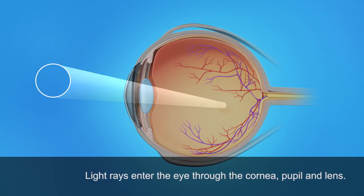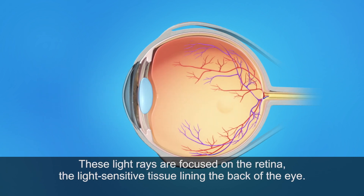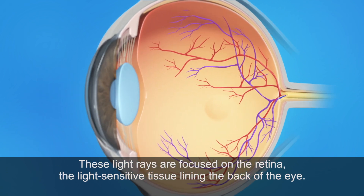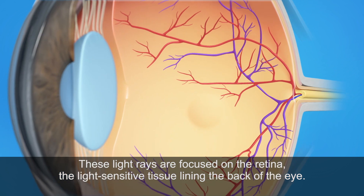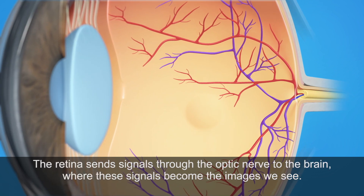Light rays enter the eye through the cornea, pupil, and lens. These light rays are focused on the retina, the light-sensitive tissue lining the back of the eye. The retina sends signals through the optic nerve to the brain, where these signals become the images we see.